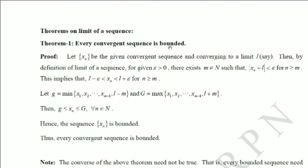A sequence is said to be bounded if it has both an upper bound and a lower bound. So we have to obtain both. Upper bound means xn is less than or equal to some number, and lower bound means xn is greater than or equal to some number — so xn lies between two numbers for all n. Using the hypothesis that the sequence is convergent, we have to show it is bounded.